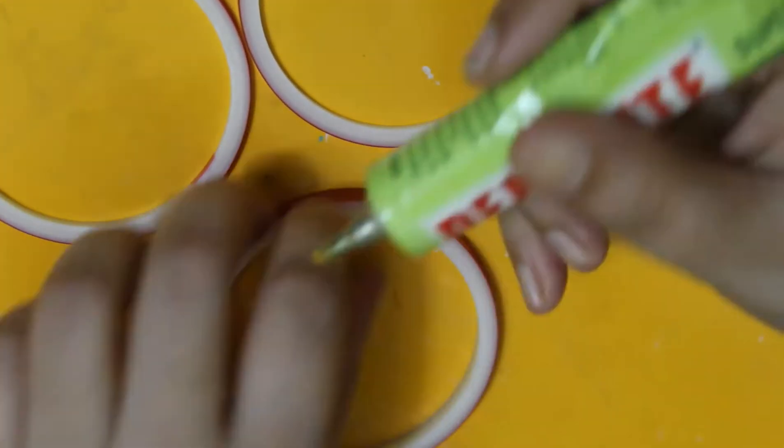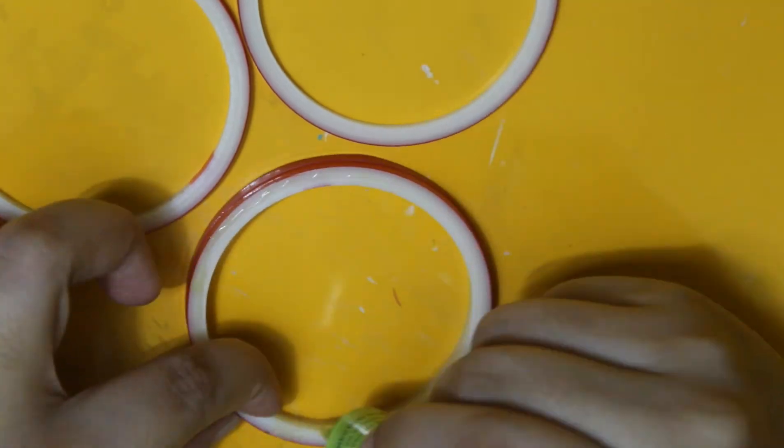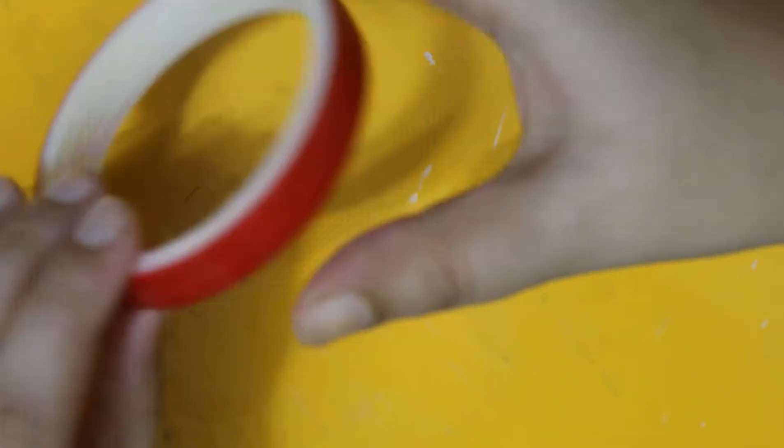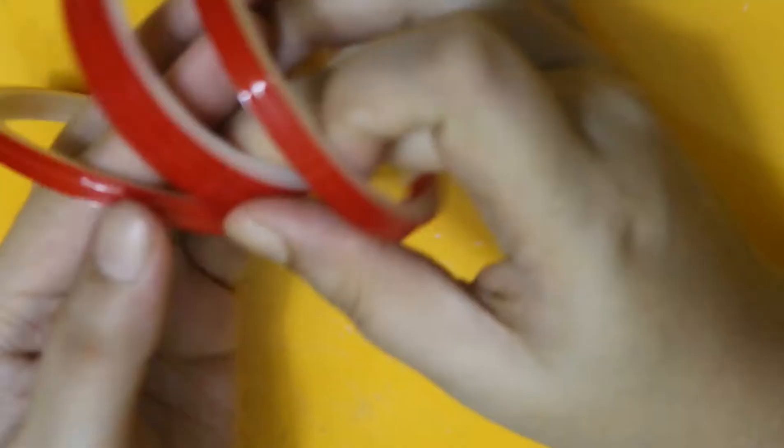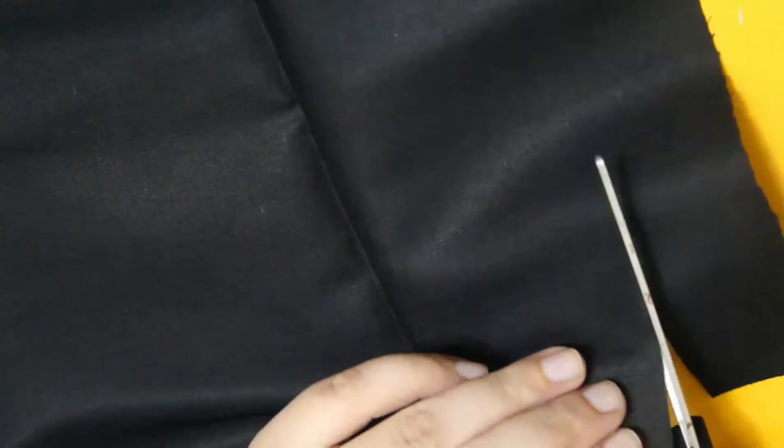My plan is to make a set of three bangles with two thin bangles going on both sides of a thicker bangle. I already had this black cotton fabric with me - you can choose any other color.